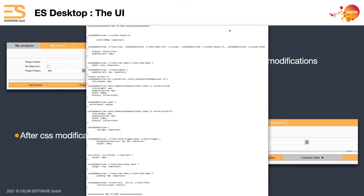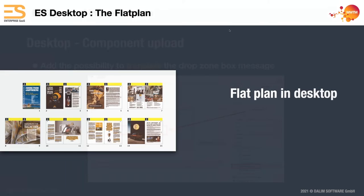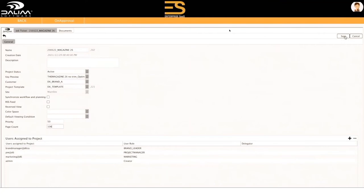Smart views using CSS don't necessarily have to be stacked on top of each other — you can set them side by side as well. On the desktop component for uploading files, you can change the text using translation to change what's in the drop zone. A nice one that's been asked by many publishing customers: you now have a flat plan in the desktop. The ES flat plan will be represented inside the desktop, and there's a tab for the job ticket showing the flat plan itself and the job ticket.